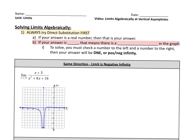As we've always been doing, we're going to always try direct substitution first. If my answer is a real number, then we know that that's our answer. If we get zero over zero, we know our ways out of that. But today, if your answer is a number over zero, that means that there is a vertical asymptote in the graph.